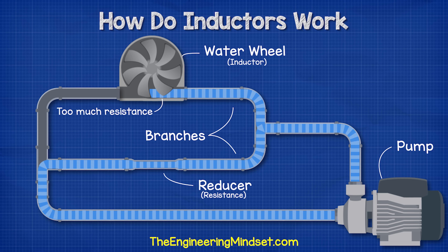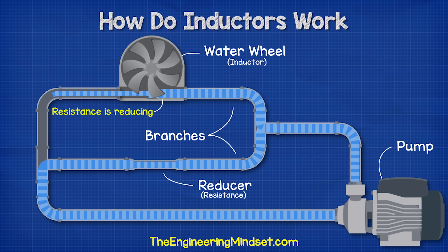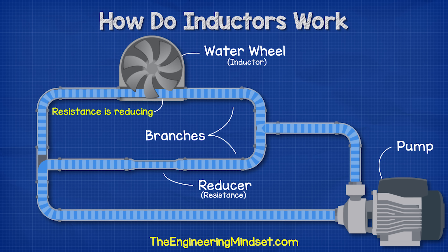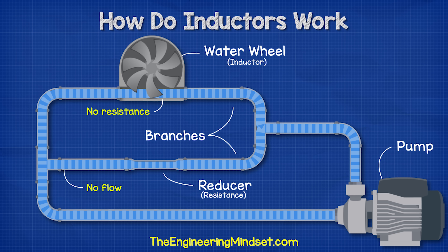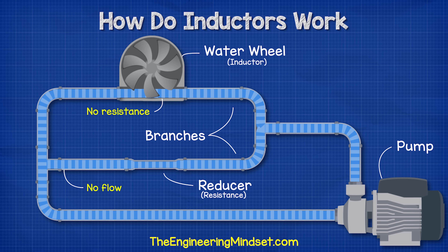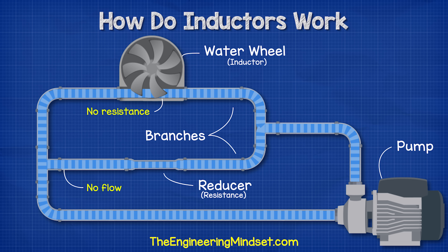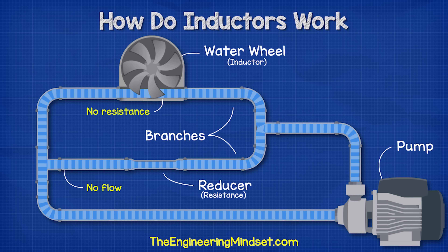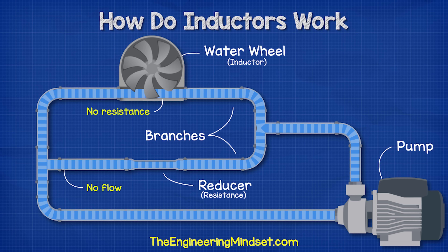As the water keeps pushing, the wheel will begin to turn faster and faster until it reaches its maximum speed. Now the wheel doesn't provide almost any resistance, so the water can flow through this path much easier than the path with the reducer in it. The water will pretty much stop flowing through the reducer and will all now flow through the water wheel.